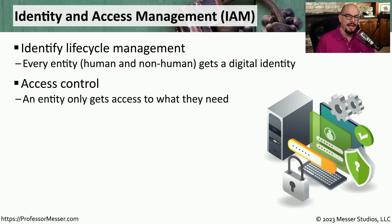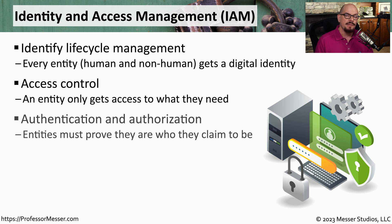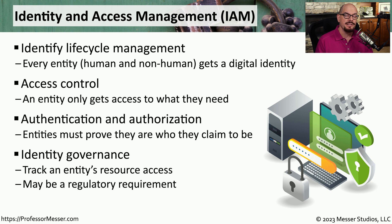IAM is responsible for determining access control. So when someone starts with the company, they may need access to email, access to a primary application, and access to the internet. The authentication and authorization process requires the user to identify themselves in some way — generally with a username, a password, or perhaps some other type of authentication factor. And once the user has the access they need, we need to log and monitor all of the access to this data.